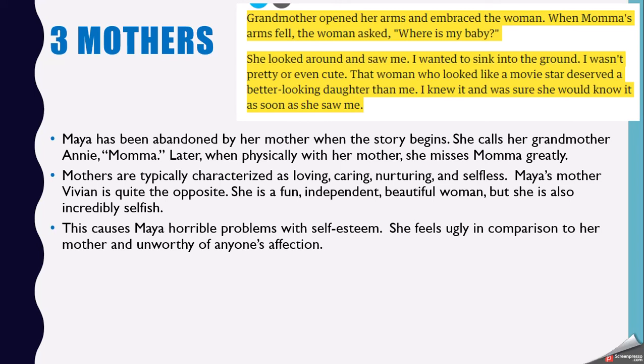Here's an example: 'Grandmother opened her arms and embraced the woman. When Mama's arms fell, the woman asked, Where is my baby? She looked around and saw me. I wanted to sink into the ground. I wasn't pretty or even cute. That woman who looked like a movie star deserved a better-looking daughter than me. I knew it and was sure she would know it as soon as she saw me.' This is the scene where Maya is reuniting with her mother — calling her grandmother Mama and calling her mother 'the woman.'